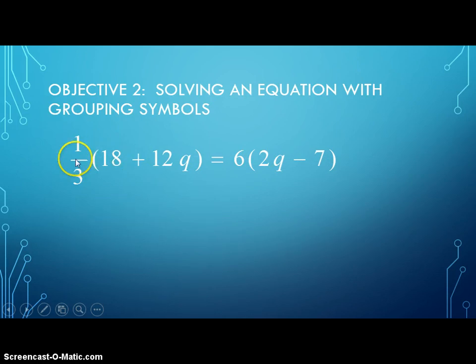1 third of 18 is 6. 1 third of 12 is 4. So I'm going to have 6 plus 4q. And 6 times 2 is 12. And 6 times 7 is 42. No negatives to distribute here, so nothing to worry about with the signs. But that can come into play, so you've got to be careful. And again, this is now that variable on both sides that we just saw in the last problem.